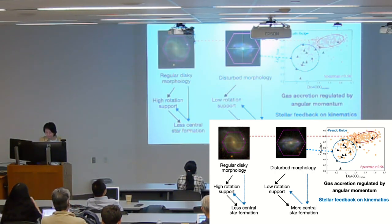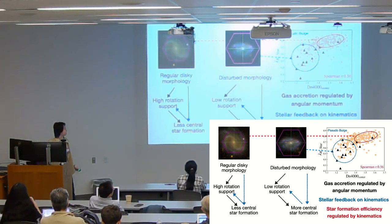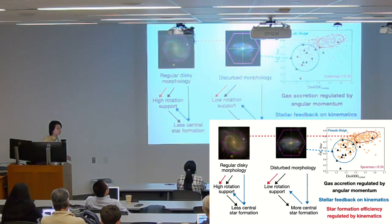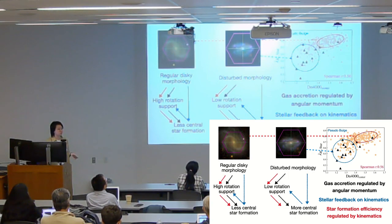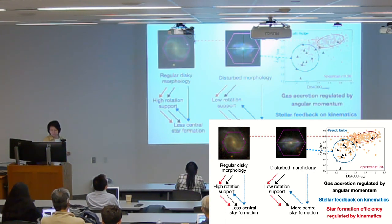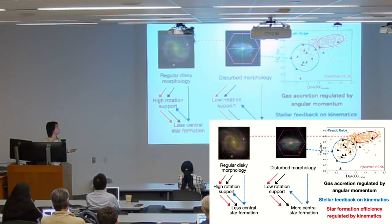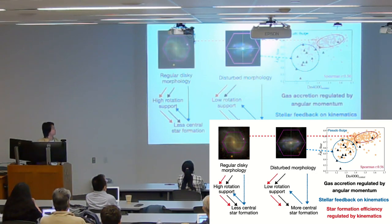Another possible scenario is that star formation efficiency is also regulated by kinematics. For a galaxy with regular morphology and higher rotation support, the shear may prevent gas from collapsing to form stars. For a galaxy with disturbed morphology, reduced rotation support provides enough dispersion to make star formation more efficient. I have presented several scenarios to explain these results; we don't know which is correct, but we have seen evidence for some of these effects in simulations, and it will be interesting to compare these observational results.